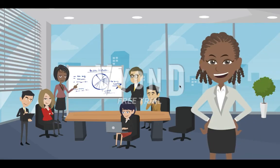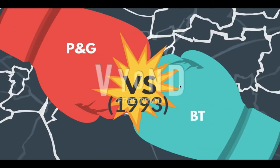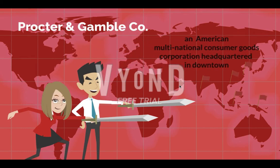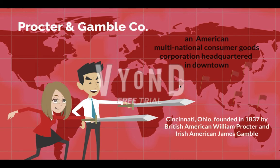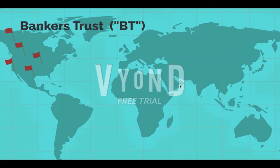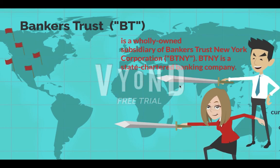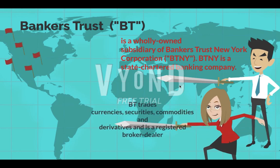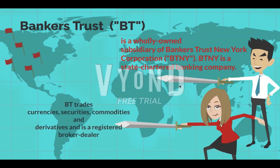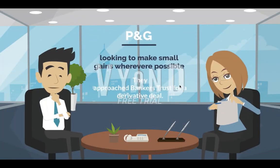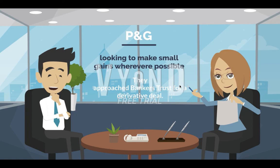Now let's move to the case study: P&G versus Bankers Trust, November 1993. Procter and Gamble is an American multinational consumer goods corporation headquartered in Cincinnati, Ohio, founded in 1837 by William Procter and James Gamble. Bankers Trust is a wholly owned subsidiary of Bankers Trust New York Corporation. Bankers Trust trades currencies, securities, commodities, and derivatives, and is a registered broker-dealer.